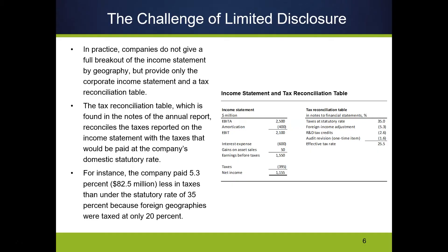We don't get all that information. All we get is what's called the consolidated income statement, which was that far right column, which combines all the foreign revenue and all the foreign costs. It lists amortization and interest expense without telling us in which tax jurisdiction those are booked. It lists the gains on asset sales without telling us that the asset was sold in the foreign subsidiary, so that revenue is taxed at the foreign rate and not the domestic rate.